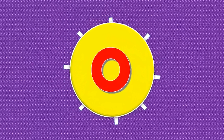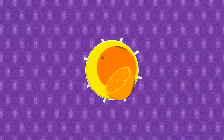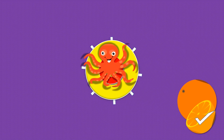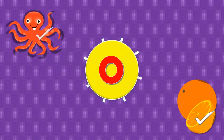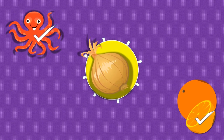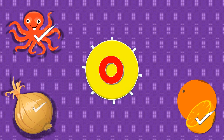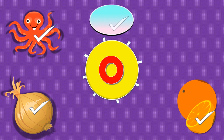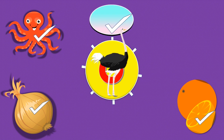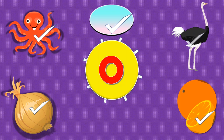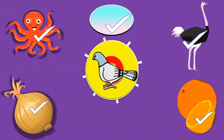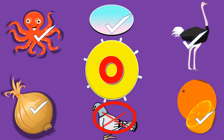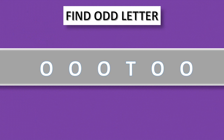O. O for orange, correct, yes. O for octopus, correct, yes. O for onion, correct, yes. O for oval, correct, yes. O for ostrich, correct, yes. O for pigeon — no, it's wrong. Find odd letter.